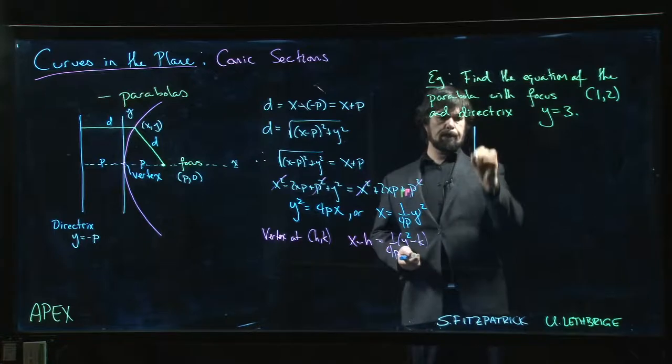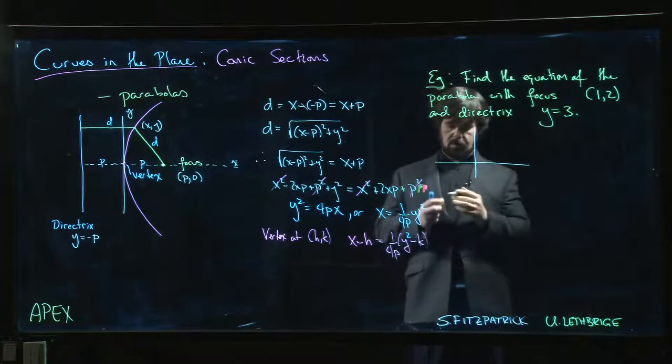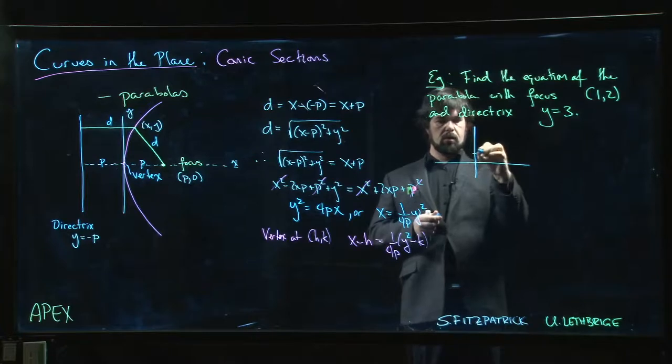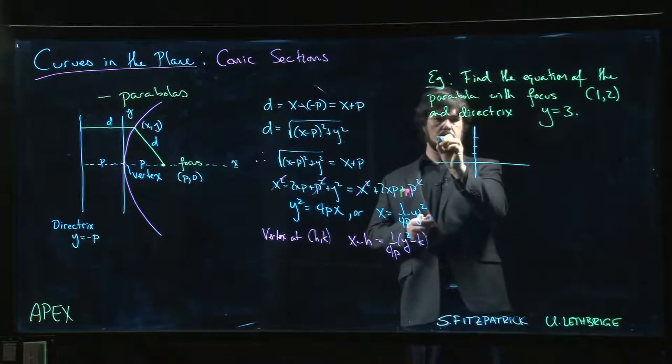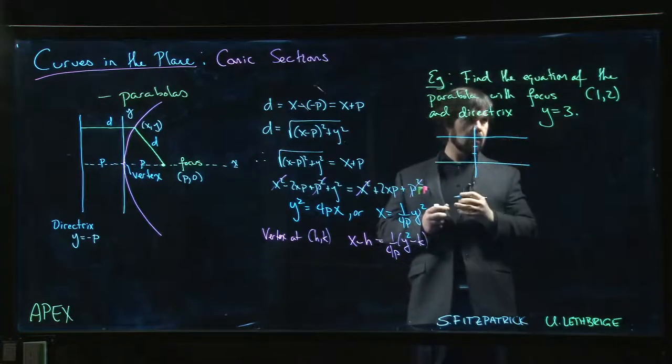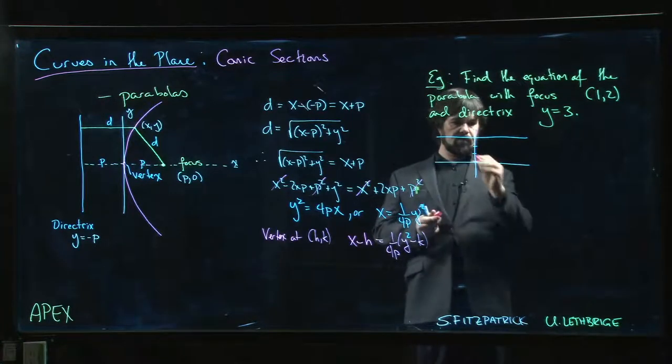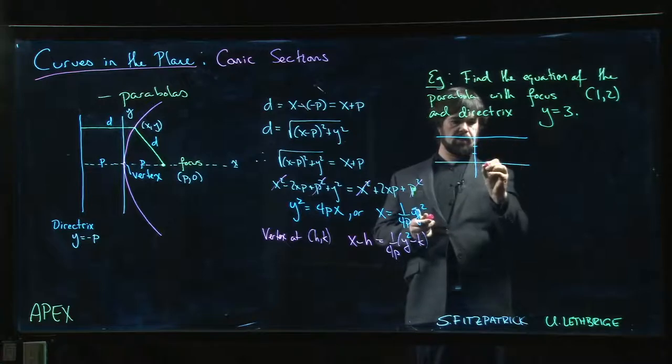So we draw our coordinate system. The directrix is y equals 3. Where's the focus? The focus is at (1, 2), so x equals 1, y is equal to 2.